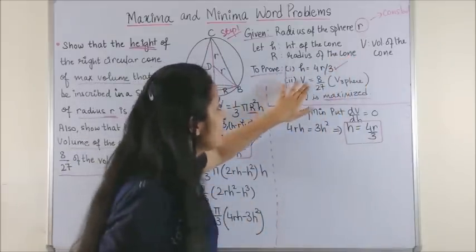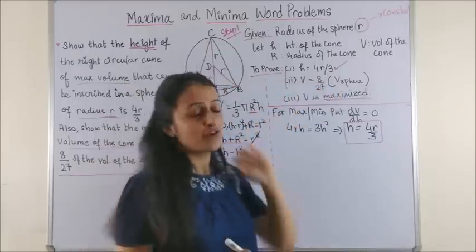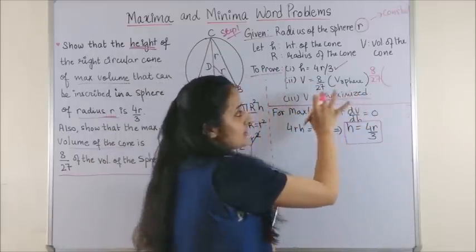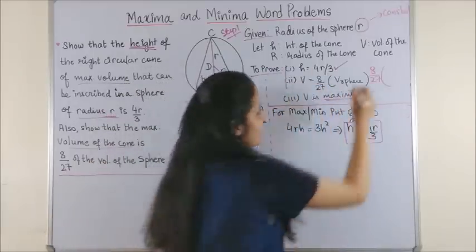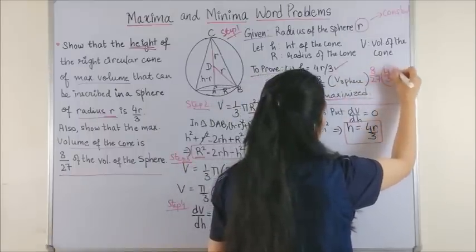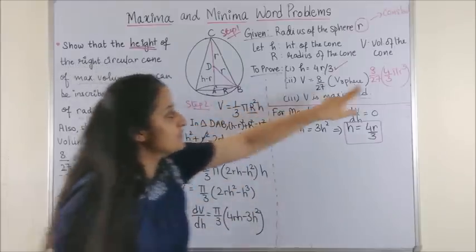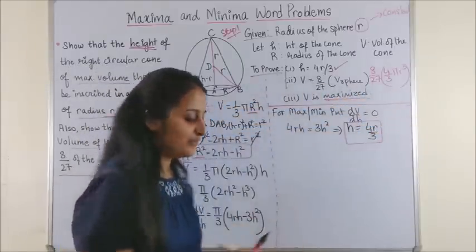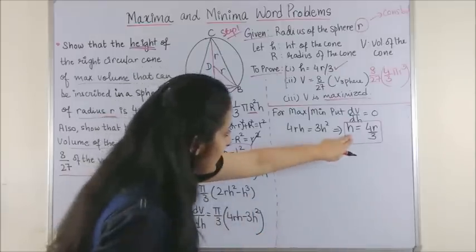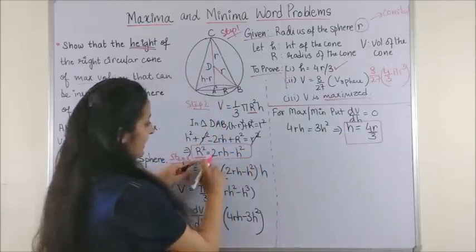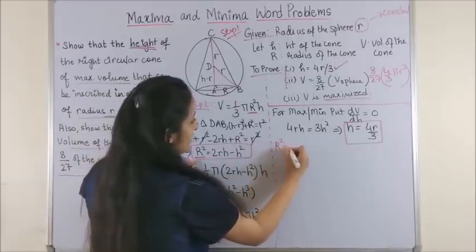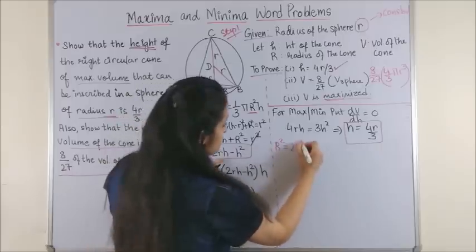Next says you have to prove that volume of the cone is equal to 8 by 27 times volume of the sphere. I hope you all remember what is the volume of the sphere: it is 4 by 3 pi r cube. So we have to prove this volume is equal to this. Let's see how we do it. So once we have found small h, your capital R square would be 2r into h minus h square.